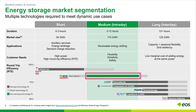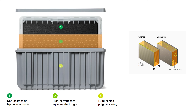EOS Energy, on the other hand, lists their grid storage technology as good for durations of 3 to 12 hours. In this case, rather than using a technical definition of duration, EOS believes their product will be competitive for 3 to 12-hour grid services. EOS has an interesting product that has potential — probably the most interesting new battery technology I've seen for grid storage outside of sodium ion. As part of this grid storage series, or after the series is complete, I'll do a deep dive into their technology.